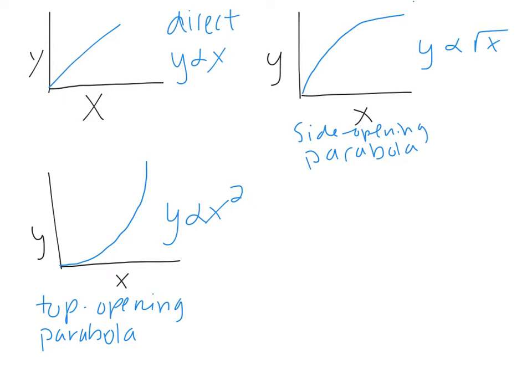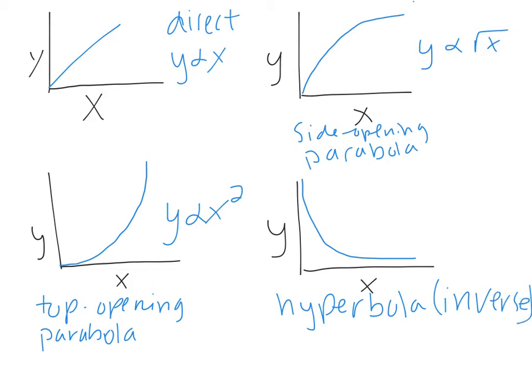And our fourth type of graph is a hyperbola. A hyperbola just means that the relationship is inverse, so y is proportional to 1 over x. To linearize this, you would take all your x values, put 1 over all those x values, leave the y values the same, and re-graph. Again, if it's a line, then you have an inverse relationship.